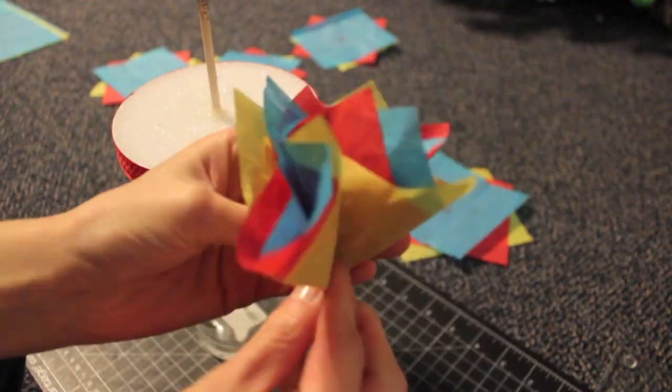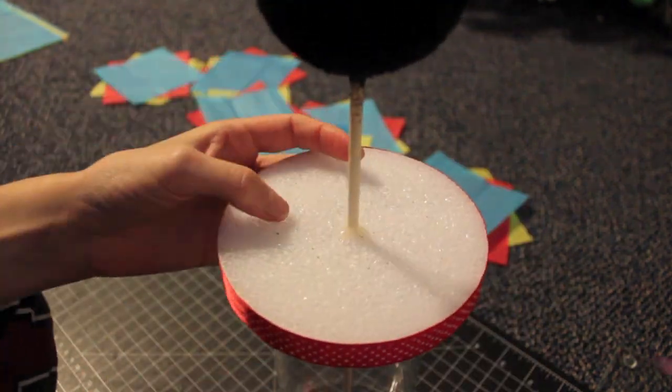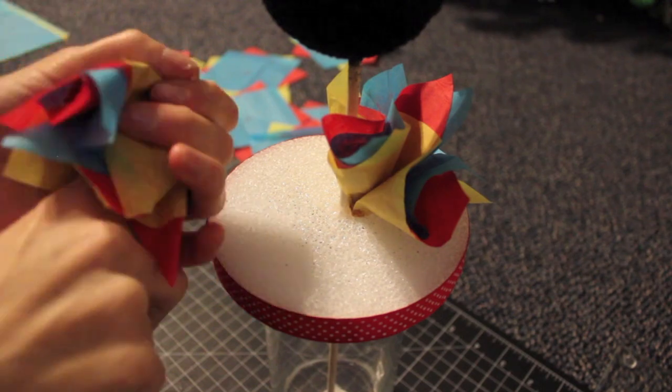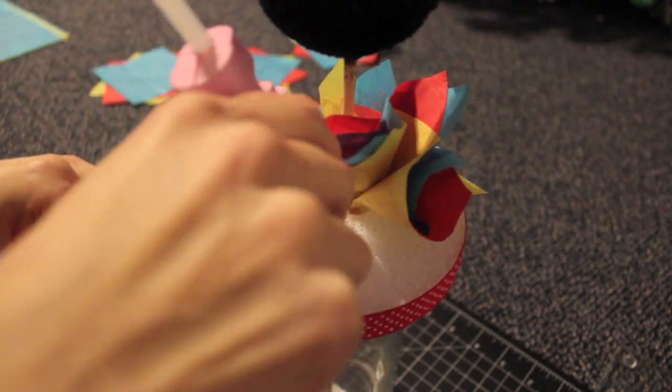Once you're done gluing, you're going to create what looks like a flower. You're going to grab one set at a time and place your index finger in the middle, folding the tissue over your finger to create the flower.